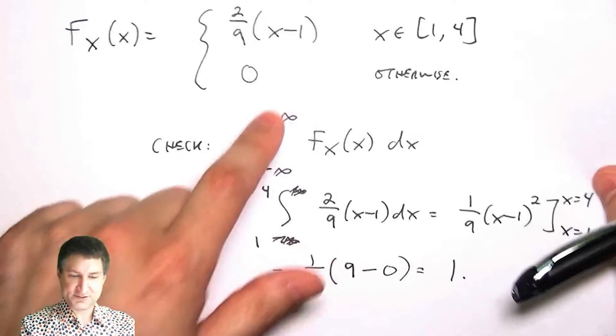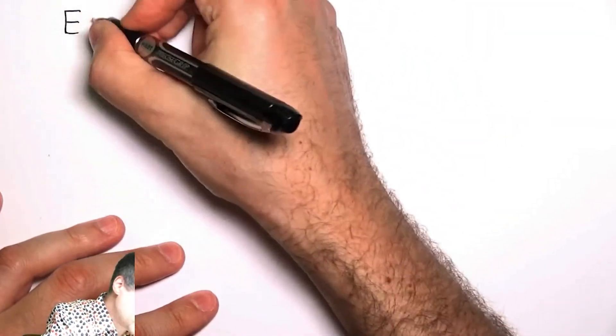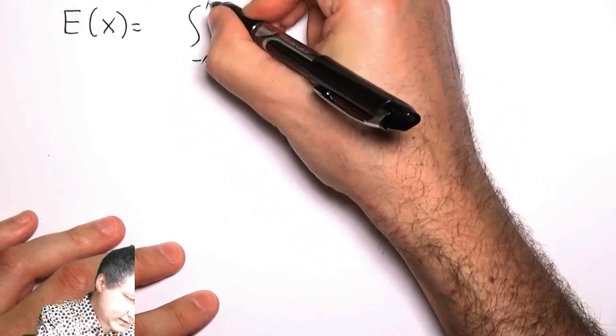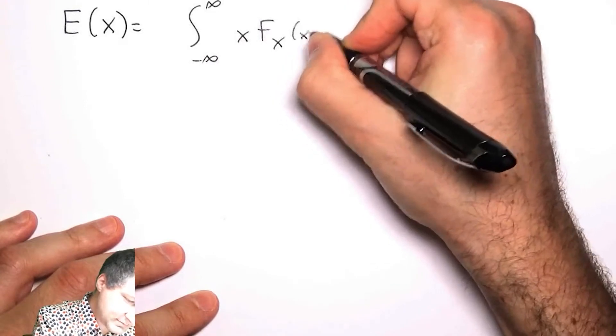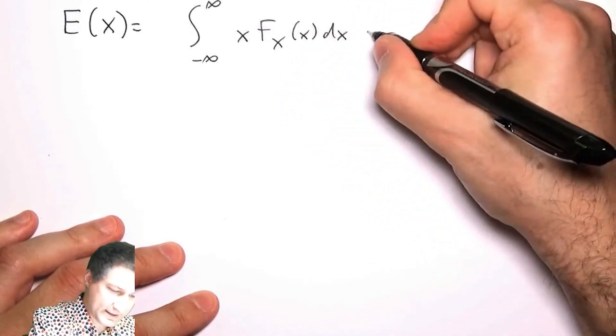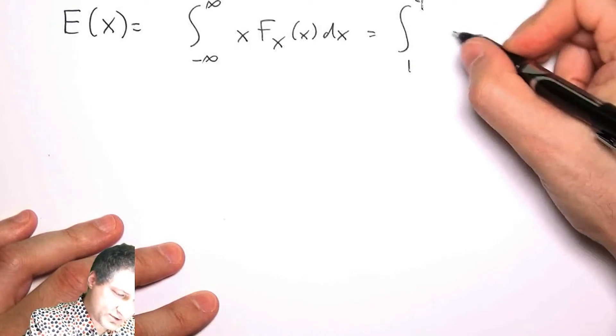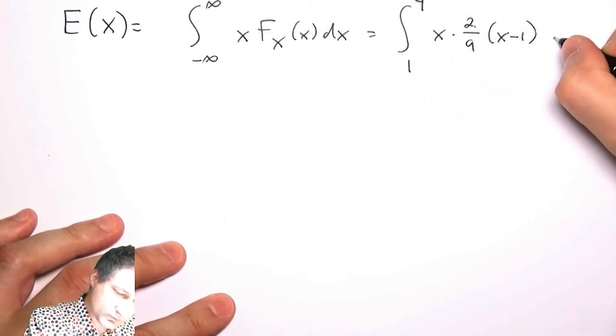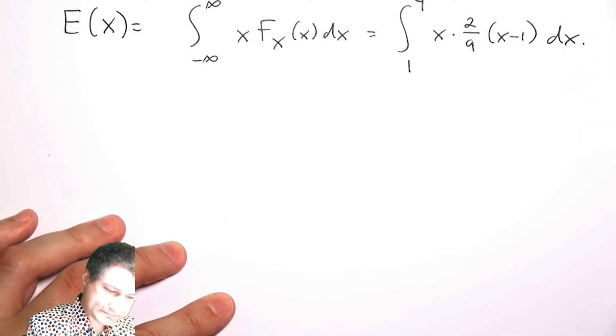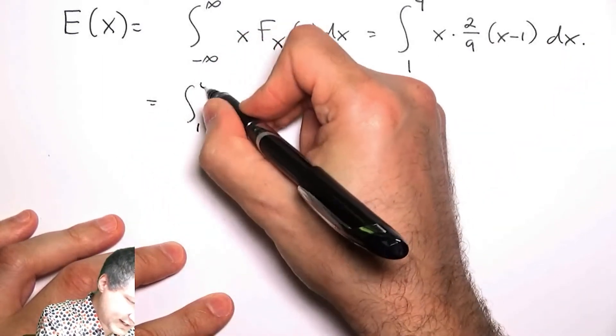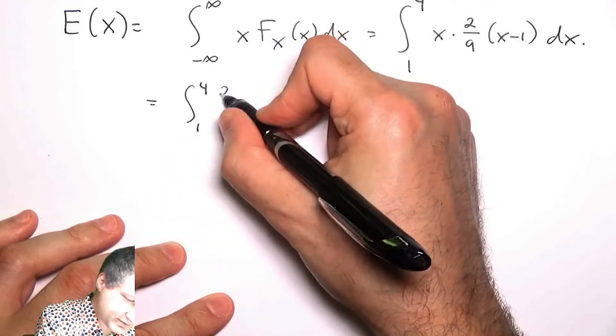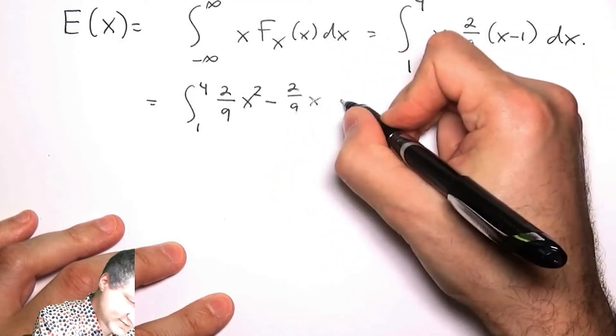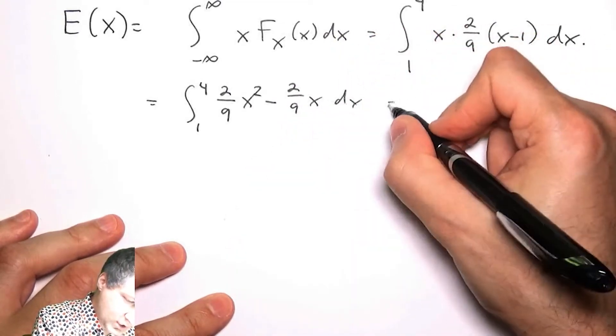Now let's figure out the expected value of this random variable. What is E(X)? I've got to integrate the value times the PDF, so from 1 to 4: x times 2/9(x-1)dx. Nothing to do but compute the integral. I'm going to make this easier: this is 2/9 x² - 2/9 x dx,